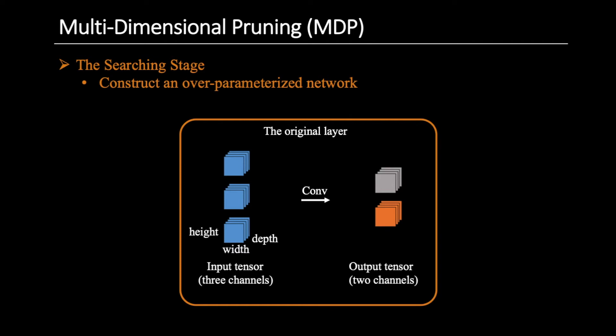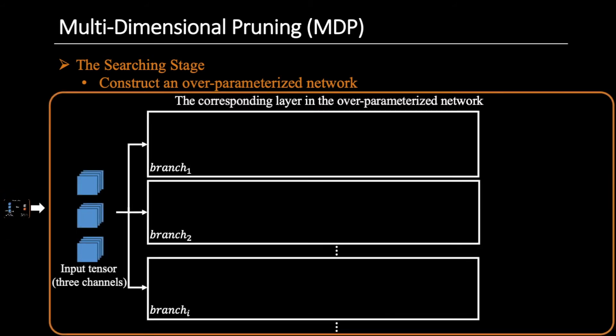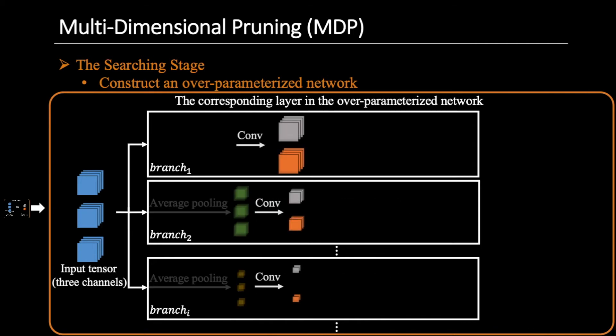It shows one convolutional layer in the original network. The depth of each block represents the length along the temporal dimension. We expand the original layer to several parallel branches to construct an over-parameterized network. In each branch, we firstly average pool the input tensor along both the spatial and temporal dimensions. Different branches have different downsampling ratios. There is no average pooling operation in the first branch, because we use the downsampling ratio of 1 along both dimensions.